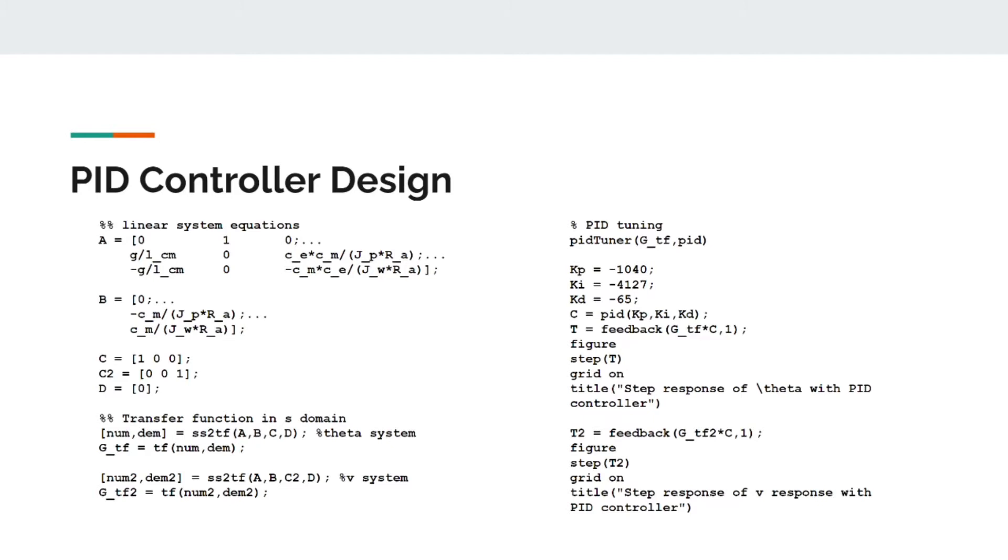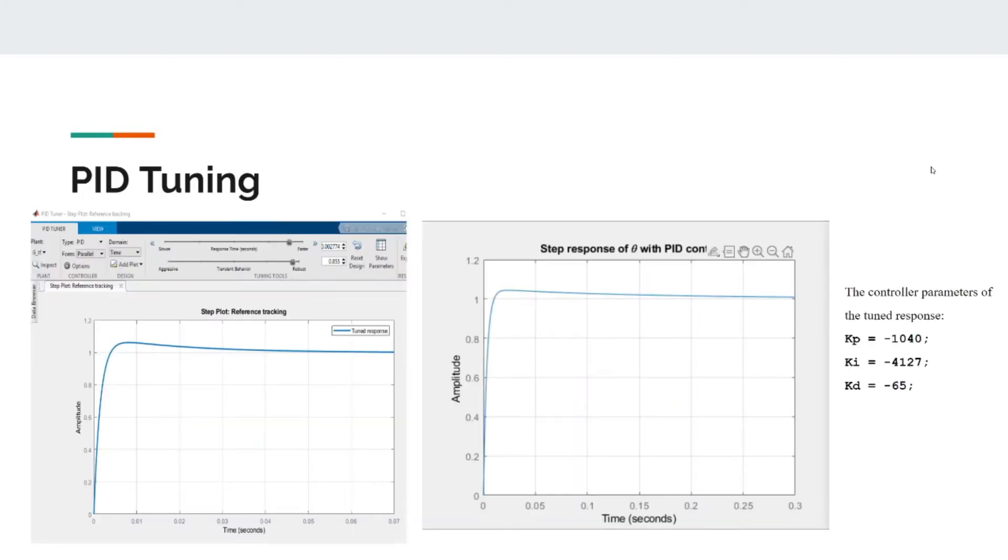We then take the transfer function separately of both systems with different Cs. And then take the PID tuner to find the PID gains. And here we have Kp negative 1040, Ki negative 4127, and Kd negative 65. We then take the feedback of the system and plot the step response. So here you can see our PID tuning response. And you can see the step response of theta with PID controller on the right. Showing that the system is stable and shows that our output is pretty good.